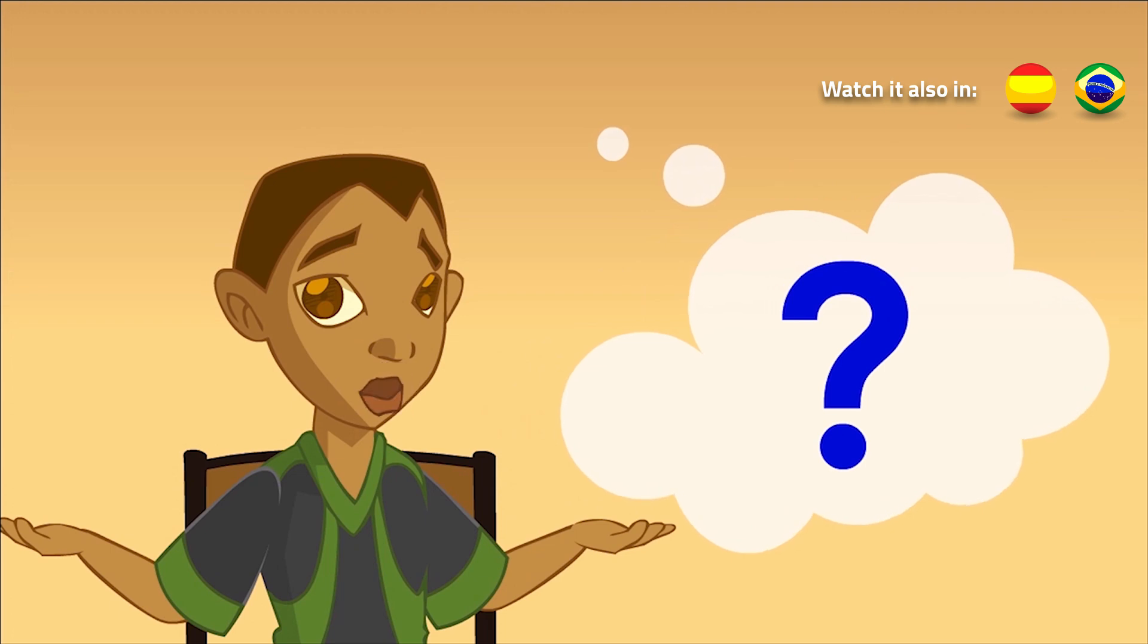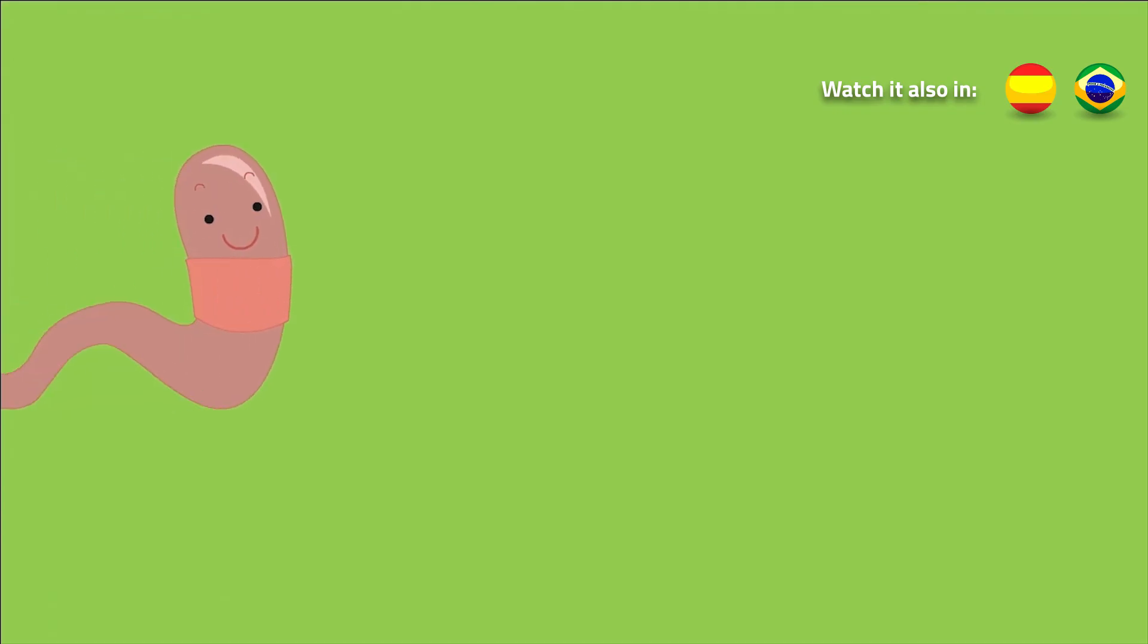Do all animals move in that way? Some animals, like worms, haven't got hard structures, like bones or cuticles, so their movements are different.